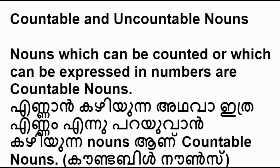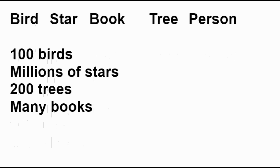Countable nouns and uncountable nouns. Nouns which can be counted or which can be expressed in numbers are countable nouns. Bird, star, book, tree, person, etc. are countable nouns. We can say hundred birds, millions of stars, two hundred trees, many books, etc.